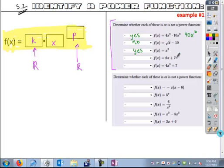What about 6x plus 7? Again, it has something added to it, so no. And 4x cubed plus 7 also has something added to it, so no.